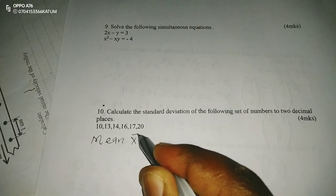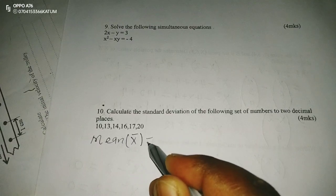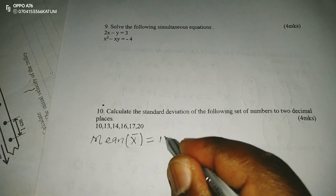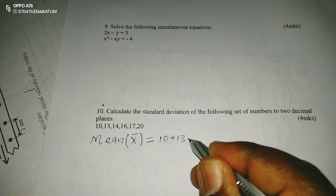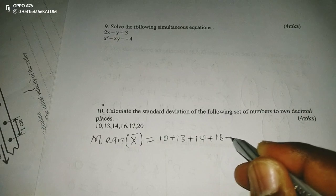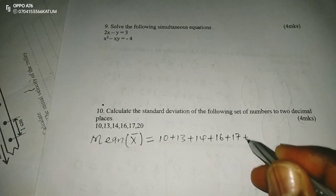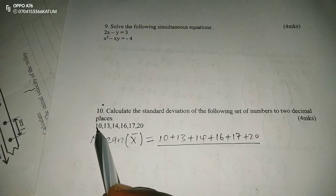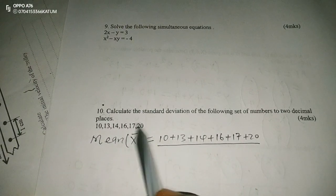Therefore, the mean is usually given by the summation of all the numbers: 10, 13, 14, 16, 17, and 20. Then I divide by the number of numbers, the number of items: 1, 2, 3, 4, 5, 6.